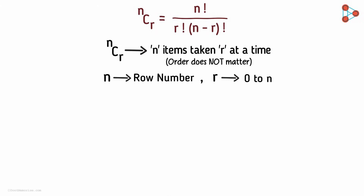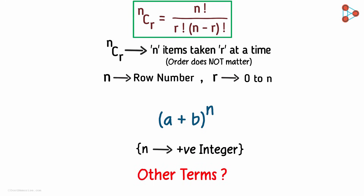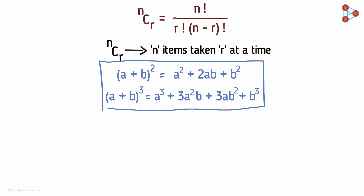Say we have to expand the binomial (a + b) raised to any positive integer. We know that to get the binomial coefficients we can use the formula of combinations. But how do we get the other terms consisting of a and b? Take these two identities for instance. Using the combination formula, we get the coefficients 1, 2, 1 and 1, 3, 3, 1 — but what about the powers of a and b?